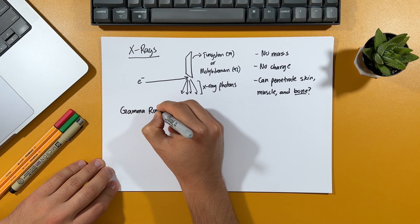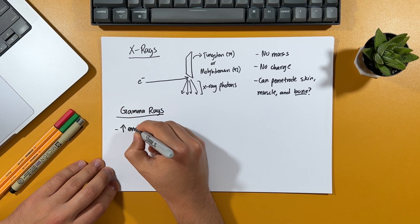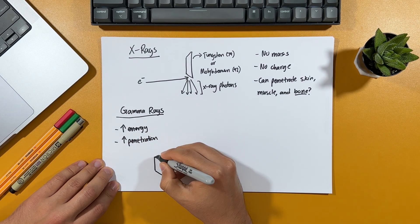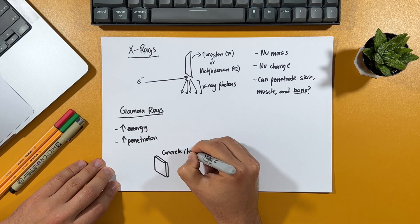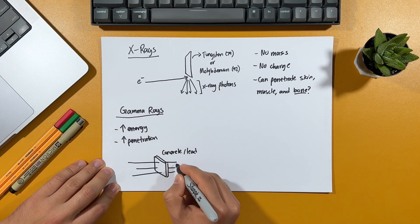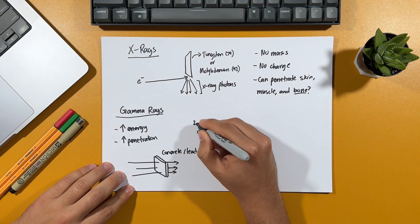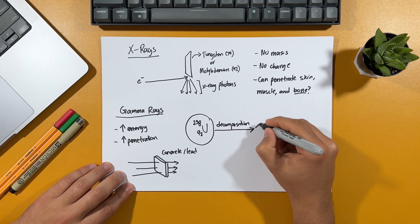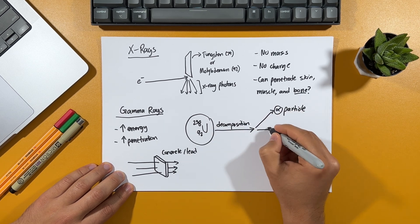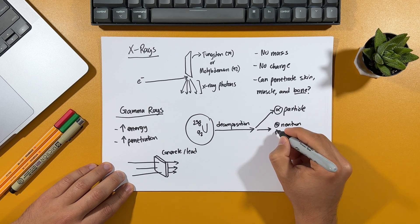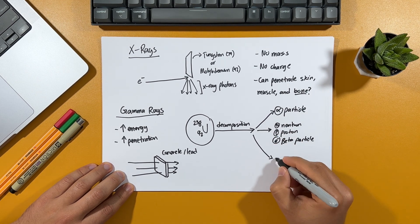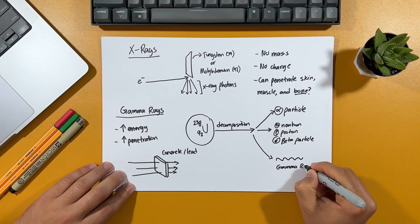Alright, now what about gamma rays? Apart from having a higher energy compared to X-rays, they have a higher penetrating power that allows them to pass through most materials, including concrete and lead. And so they're quite dangerous if not properly controlled. And unlike X-rays, which are produced by the interaction of high energy electrons with matter, gamma rays are produced by the decay of atomic nuclei or by high energy cosmic processes, such as nuclear fission, where a heavy nucleus splits.